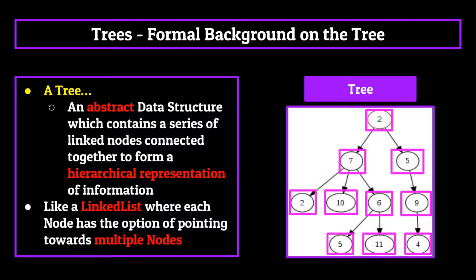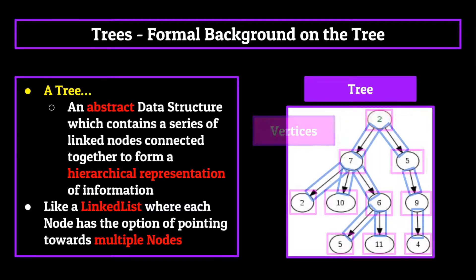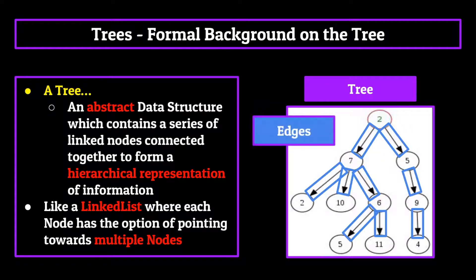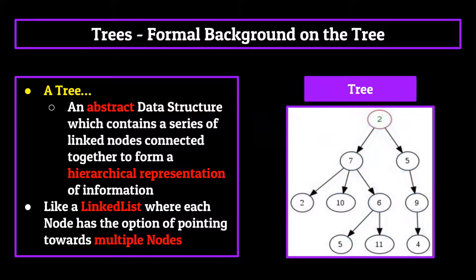Each of the nodes in a tree are called vertices and the connections between vertices, which connect our nodes together, are called edges. One thing to note is that there's only one path between any two vertices. You cannot have more than one edge connecting two vertices.